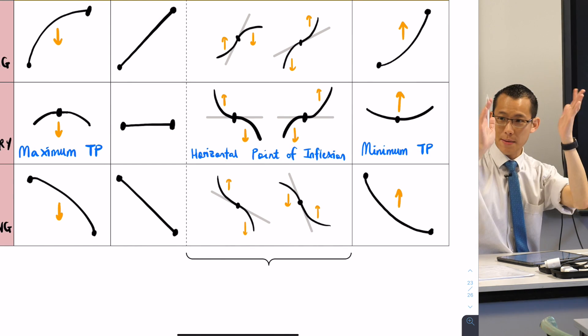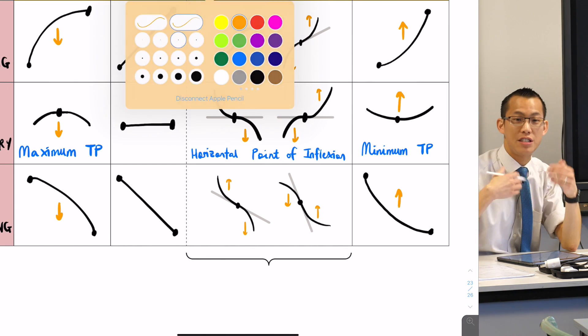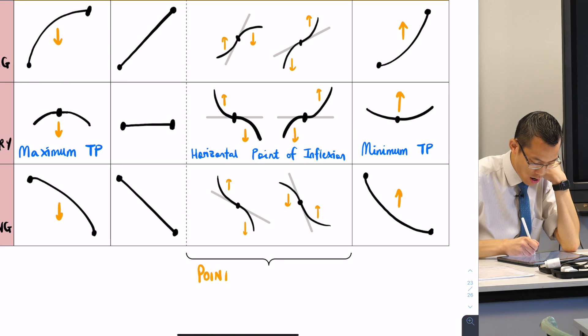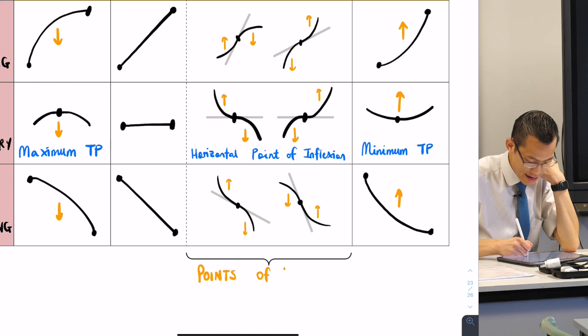So everything you can see in this little sort of semicolon in here, these are all different varieties of points of inflection.